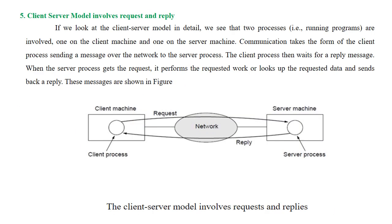The client-server model involves request and reply. If you look at the picture, there is a client machine and a server machine. The client will make a request to the server. For example, if you want to search anything, you will be the client, and the server that provides the information — for example, a Google server — is called the server. Whatever request we make is sent to the server through the network. Once received, the server will process the request and reply with a message through the network. This is called the client-server model, which involves request and reply.